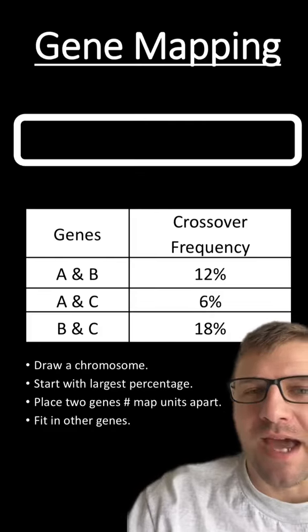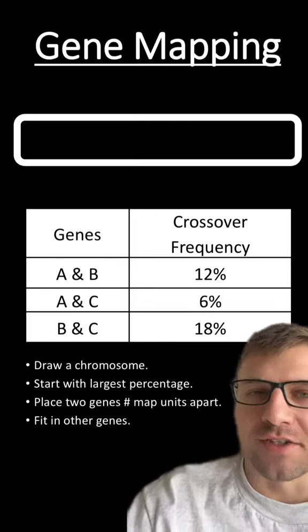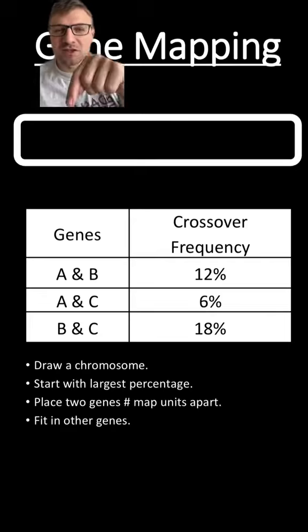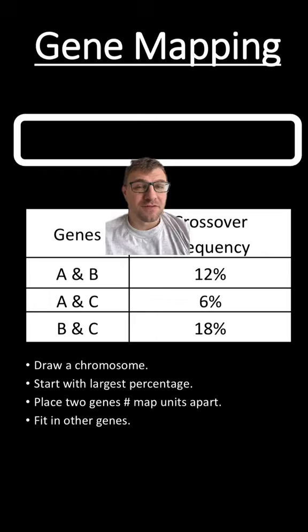Let's go over how you would map out these genes using the crossing over frequency. The first thing you should do is draw your chromosome. This whole chromosome is 50 map units long.